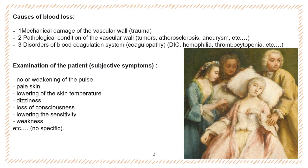All causes of blood loss can be divided into three groups. The first group is mechanical damage of the vascular wall, for example due to traumas. The second group is pathological condition of the vascular wall due to aneurysms. The third group is disorders of the blood coagulation system such as thrombocytopenia and hemophilia.